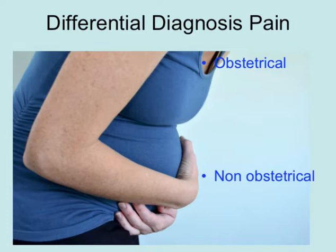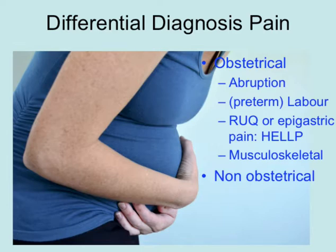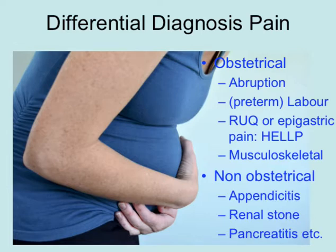The differential diagnosis of pain in pregnancy is very extensive. We think of obstetrical causes and non-obstetrical causes. The obstetrical ones include abruption, preterm labor, and right upper quadrant or epigastric pain pointing at a severe variation of preeclampsia — what we call the HELLP syndrome: hemolysis, elevated liver function, and low platelets — or sometimes musculoskeletal pain. Non-obstetrical causes include appendicitis, renal stone, pancreatitis, and other rare causes such as a bleeding splenic artery aneurysm. Always think about both obstetrical and non-obstetrical causes.